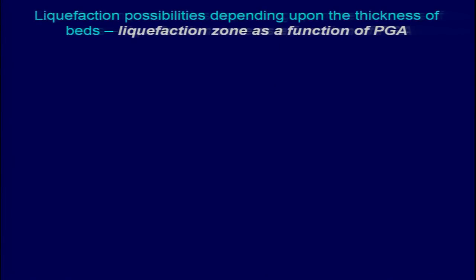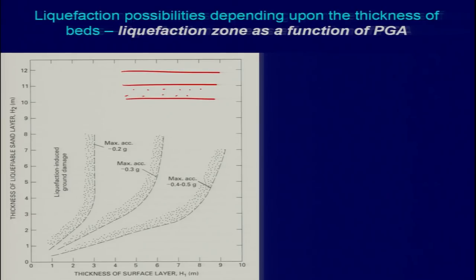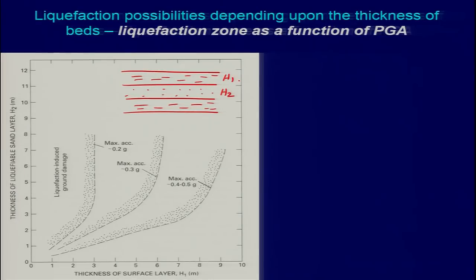Liquefaction possibility depends upon the thickness of beds, which is mainly a function of peak ground acceleration. Suppose we are having the thickness — this is what we were talking about, h1 and h2. You have unit 1, then the liquefiable unit, then another one. If the liquefiable unit is sandwiched between non-liquefiable units: h1 is your non-liquefiable unit, and h2 is your liquefiable layer.